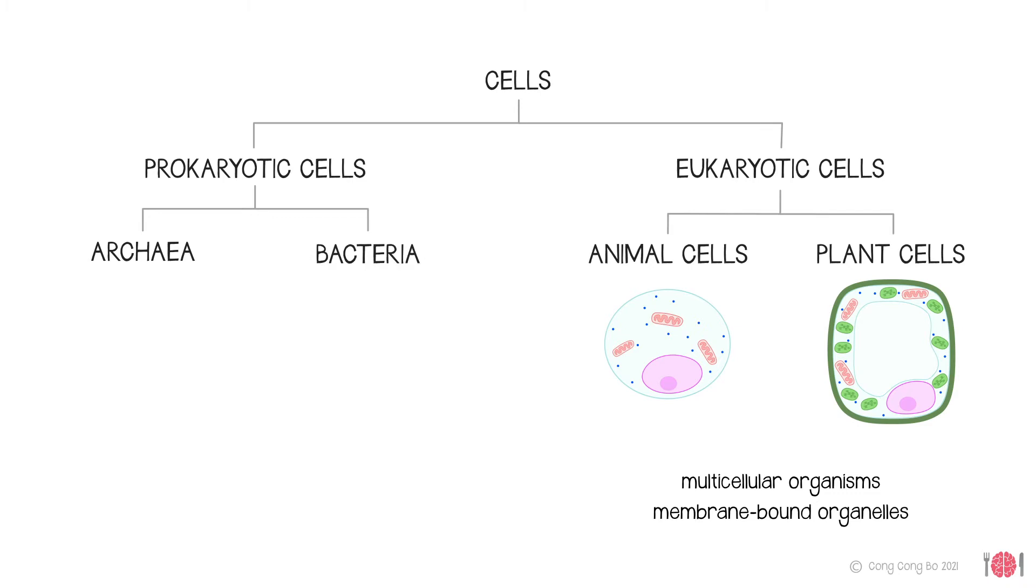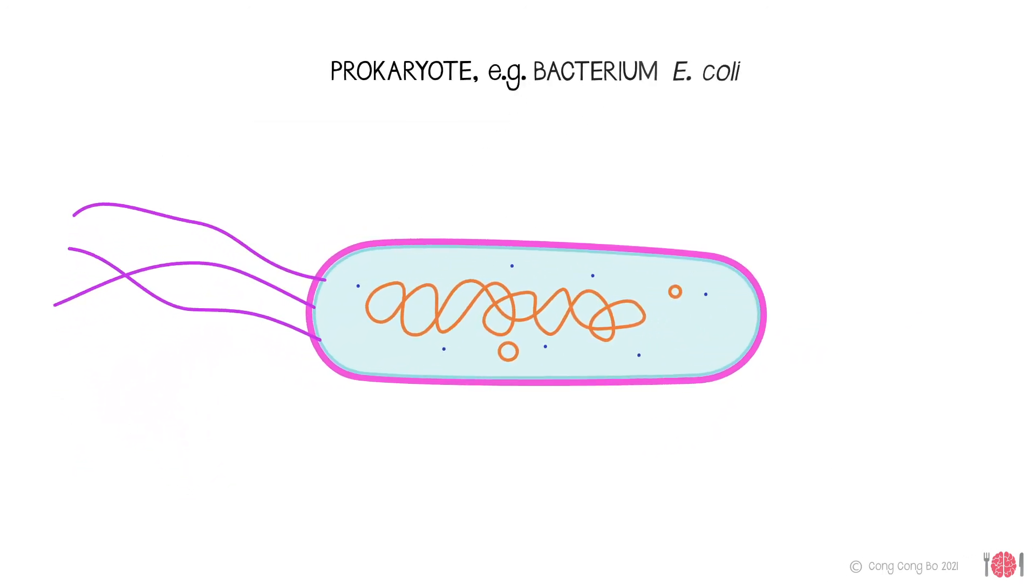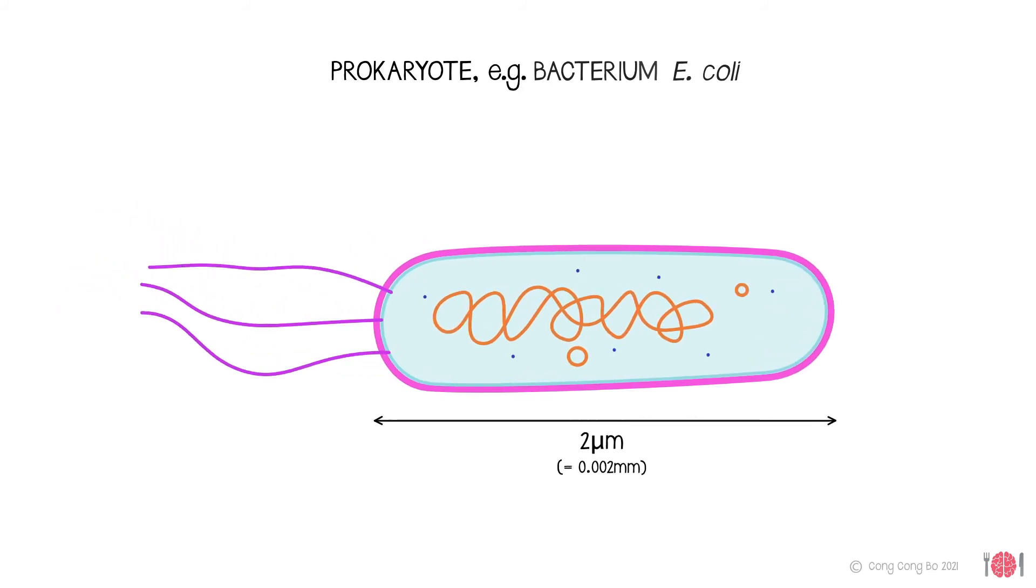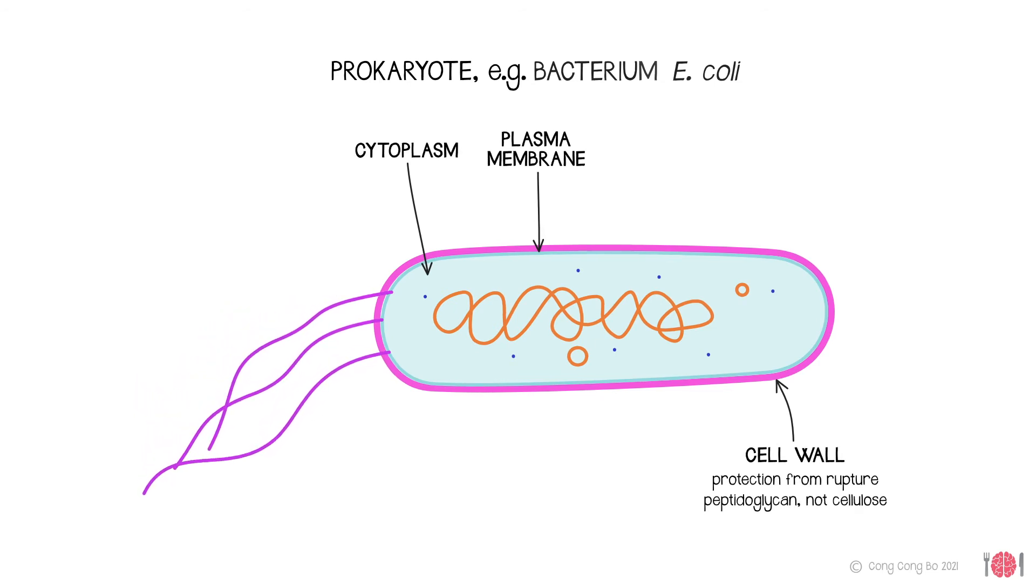Bacterial cells are prokaryotes and look quite different. They are much smaller. They have no membranes around their internal components. This bacterium here is E. coli, resident in the gut of every human. It is only about 2 micrometres long. While it has a wall around its plasma membrane to protect the cell from damage, the cell wall is made of protein, not cellulose.